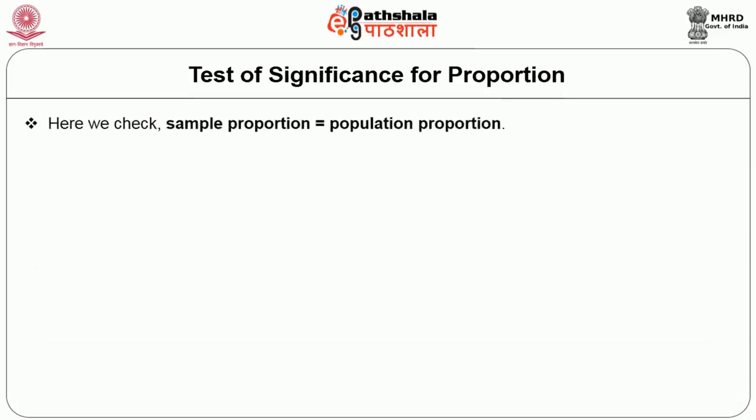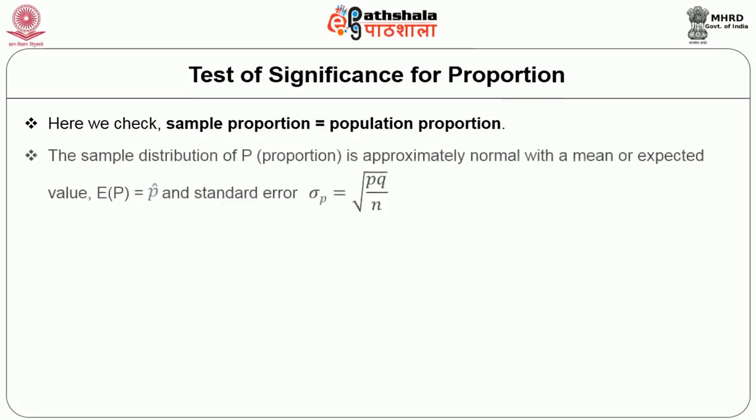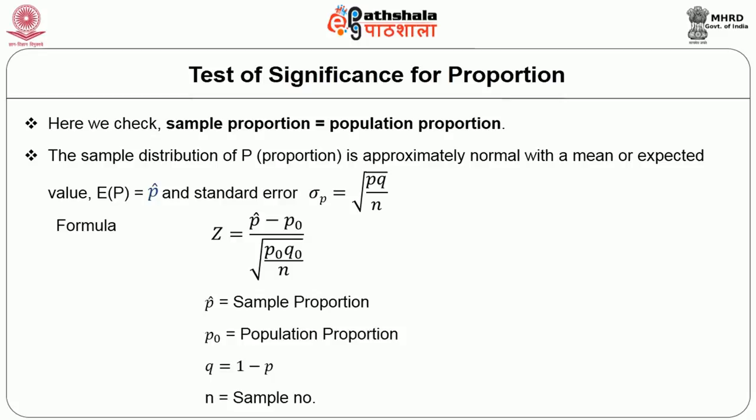Here we check whether the sample proportion is equal to the population proportion. The sampling distribution of proportion is approximately normal. The formula for this proportion test is given here, where p-cap is the sample proportion, p0 is the population proportion, q is 1 minus p, and n is the sample number.